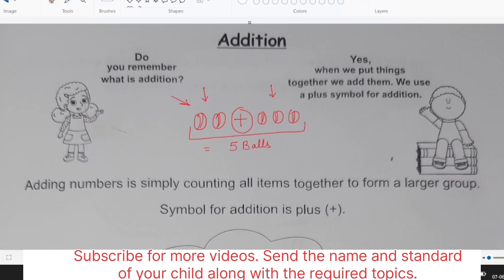I hope it is clear. So we can say adding numbers is simply counting all the items together to form a larger group. That means when we will add two or more numbers we will definitely get a larger number, a bigger number.